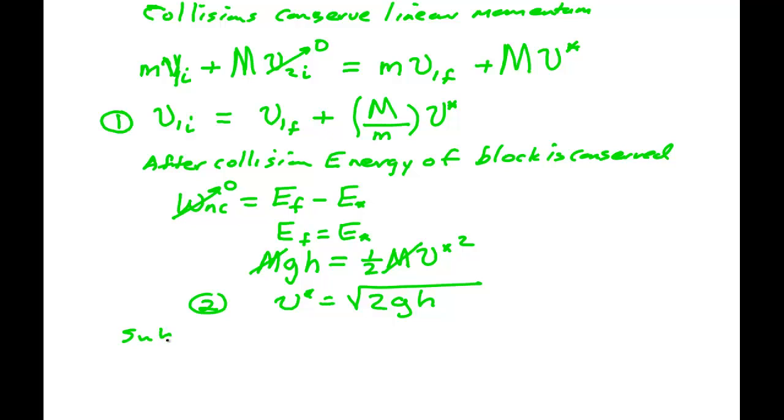I substitute 2 into 1. So V1I is now V1F plus the mass of the block over the mass of the bullet times the square root of 2gh. And I have all of these quantities now. So I can now punch my calculator and find the answer to this problem.